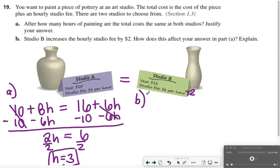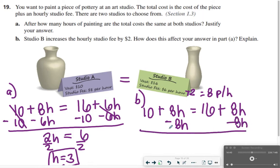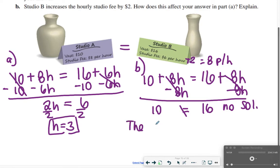How would Studio B increasing their hourly fee by $2 affect your answer in part A? So you essentially just do the same equation, except now instead of $6 per hour, they're going to charge $8 per hour. So $10 plus 8H is equal to $16 plus 8H. And you're going to notice something right away when you're trying to move over variables, you're left with $10 and then $16 on one side, and these do not match, so there's no solution here. And since there's no solution, that means the prices will never be the same. Studio A would probably be the better choice there or it would be cheaper to go there.